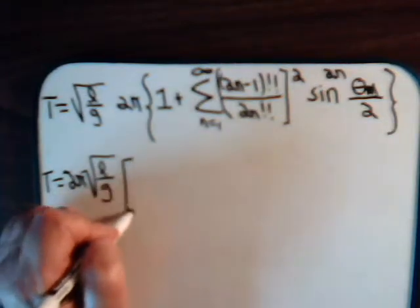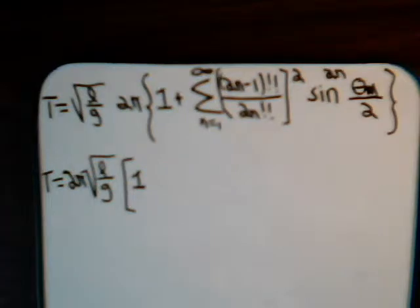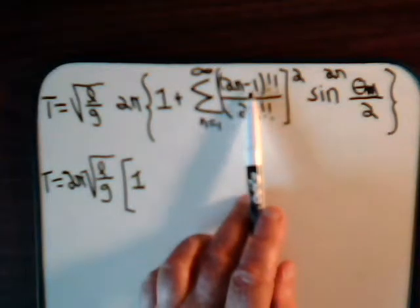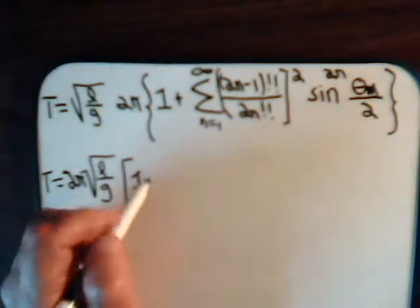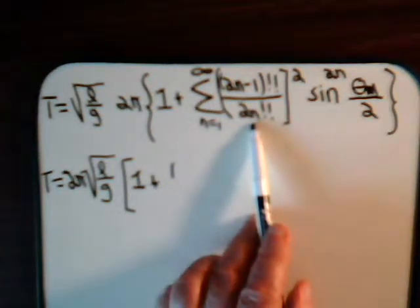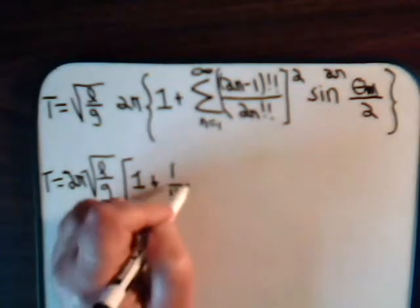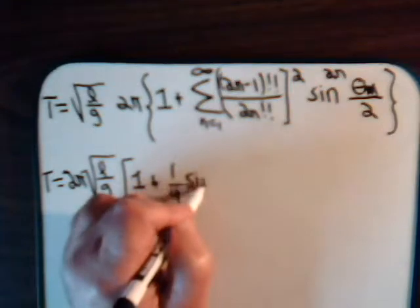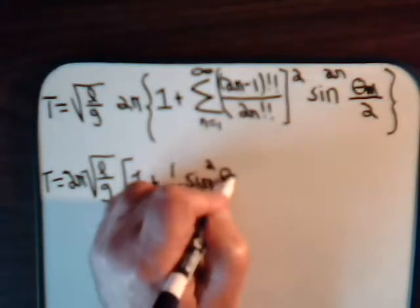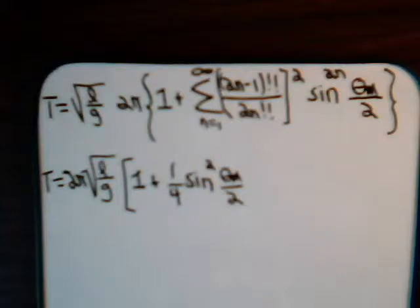We have 1, and then we start summing when n equals 1. So 2 minus 1 is 1, 1 squared is 1. This is 2, 2 squared is 4. And then we have sine squared theta_m over 2. That's where n equals 1.